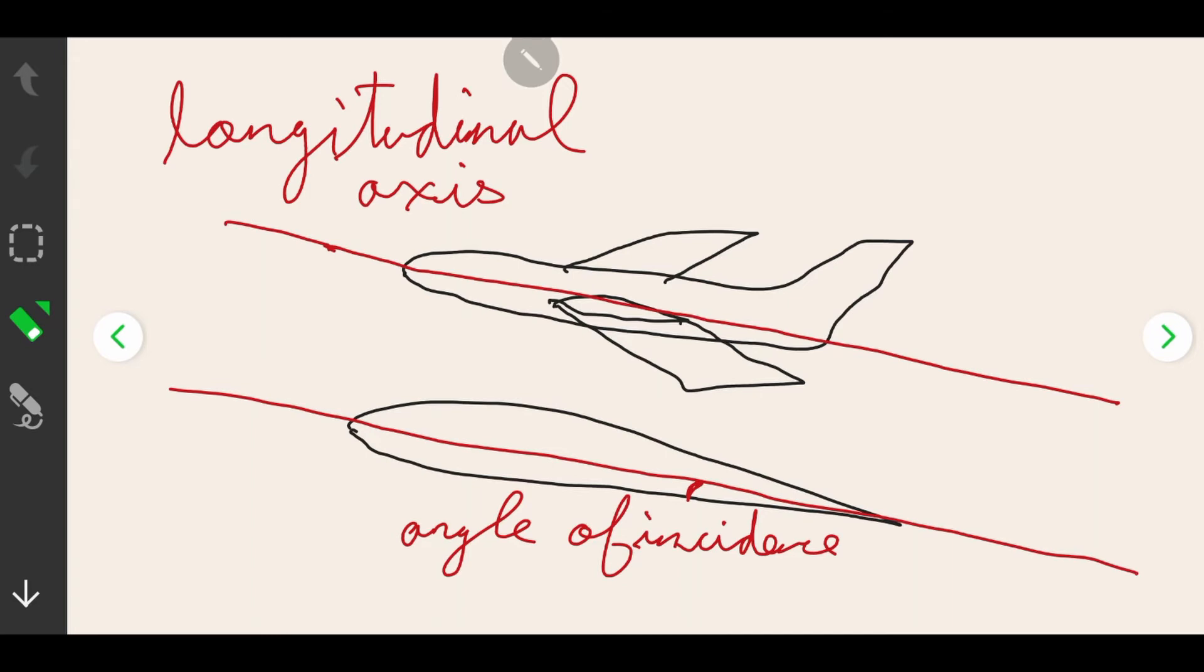Now we'll talk about angle of attack. Angle of attack is the angle between relative airflow—the airflow going towards an airfoil—and the cord line.